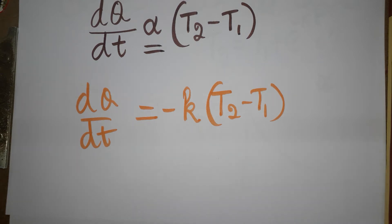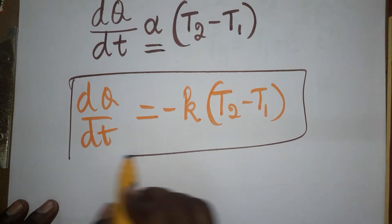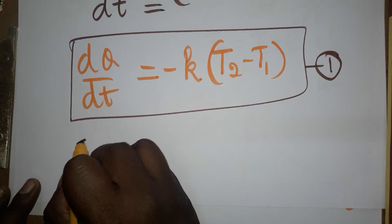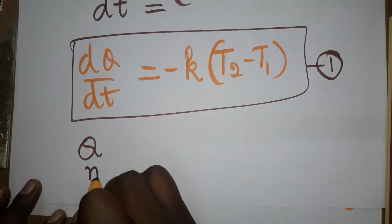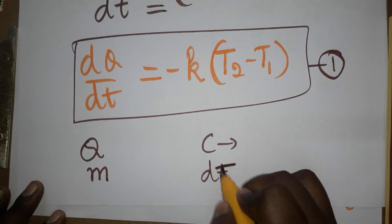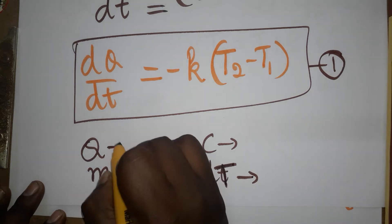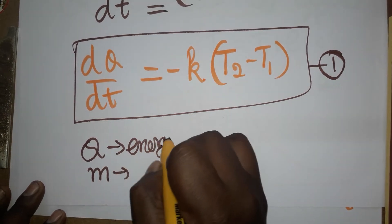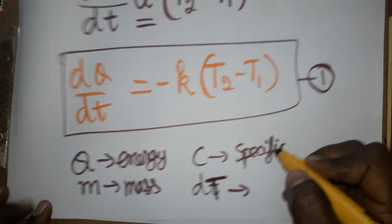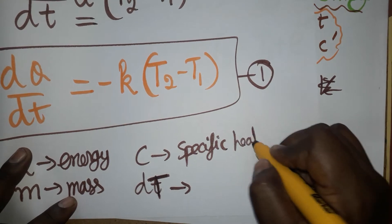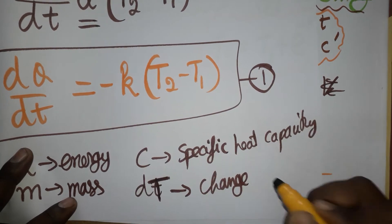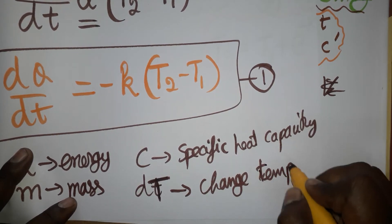I am taking this as equation one. The next equation: Q equals mcT, where m is mass, c is specific heat capacity, and dT is the change in temperature. Note that capital T is for temperature and small t is for time.